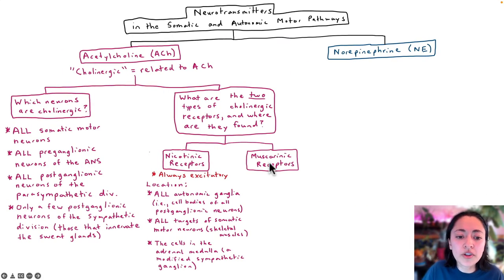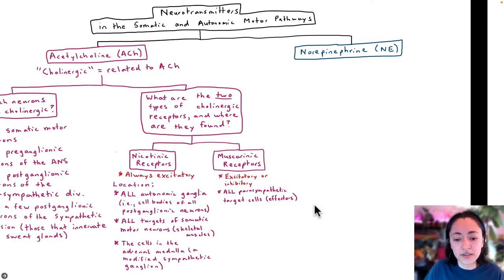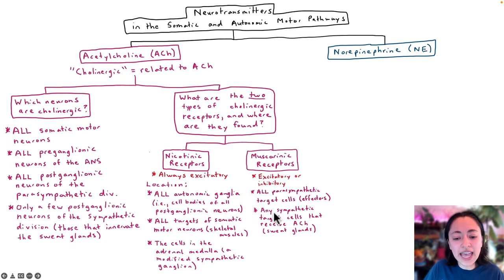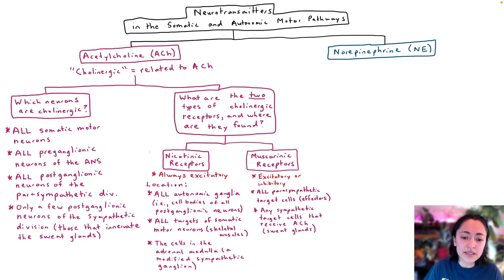Muscarinic receptors are the other type of cholinergic receptor. They are not found in as many locations. They can be excitatory or inhibitory and are found on all parasympathetic target cells or effectors. They are also found on any sympathetic target cells that receive acetylcholine — which only happens with sweat glands, because sweat glands are the only glands that receive acetylcholine from the sympathetic pathway.